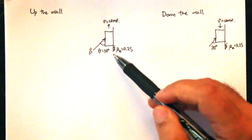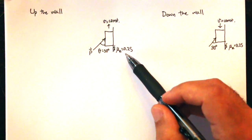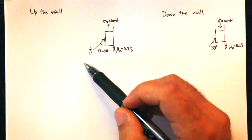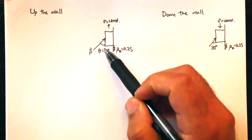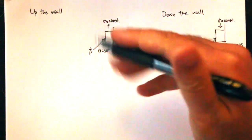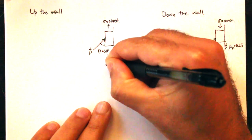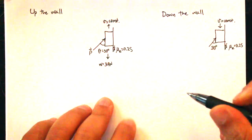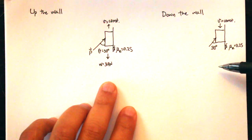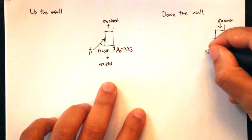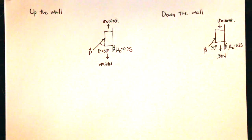This problem involves a block held against a wall with a kinetic coefficient of friction of 0.25. It's being held with a force P at 30 degrees with the vertical, and the block has a weight of 39 Newtons. The question asks: if the block is moving up or down the wall at constant velocity, what is the value of P in each case?